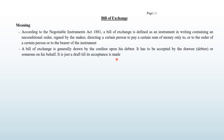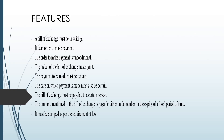There are a few features of a bill of exchange. First, it must be in writing. Second, it is an order to make payment. Third, the order must be to make the payment unconditionally. Fourth, the maker of the bill of exchange must sign it. Fifth, the payment to be made must be certain — the amount of money must be specified in the bill of exchange.